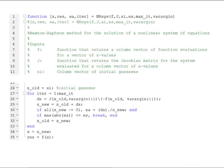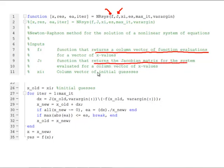So first, let's look at a function m-file to implement Newton-Raphson for a system of equations. In this function, we are going to need as inputs: F will be a function that returns a column vector of function evaluation. J is another function that returns the Jacobian matrix for the system evaluated for a column vector of x values.